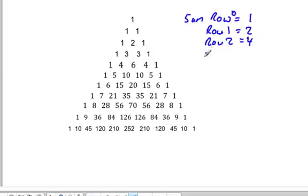And for row three, one plus three, plus three, plus one, is eight. So row three is equal to eight.